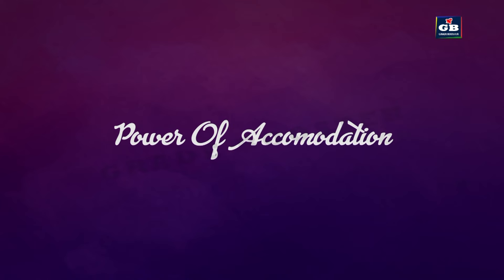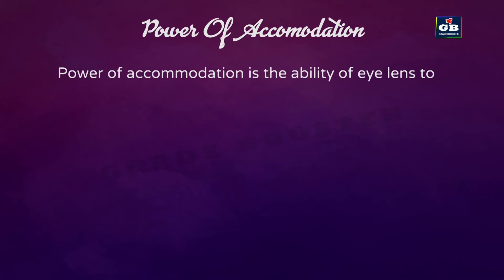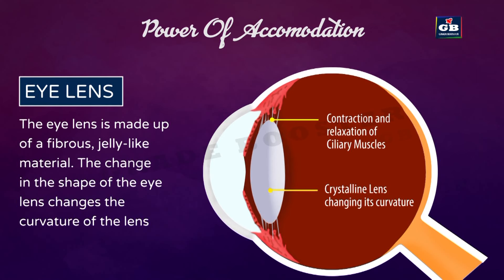Power of accommodation is the ability of the eye lens to adjust its focal length. The eye lens is made up of fibrous, jelly-like transparent material. The change in the shape of the eye lens changes its curvature, and the contractions and relaxations of ciliary muscles can modify this shape.